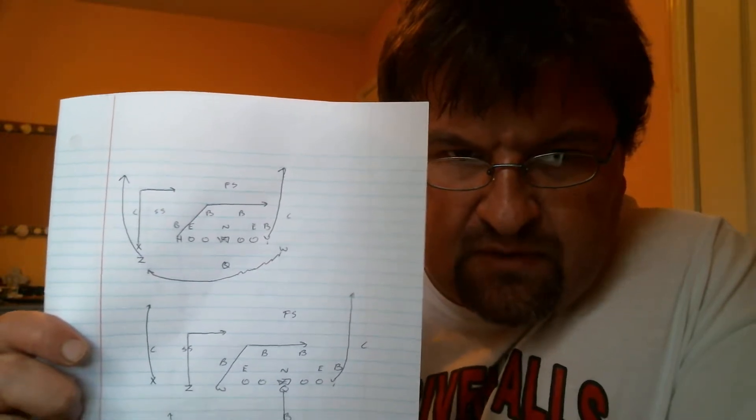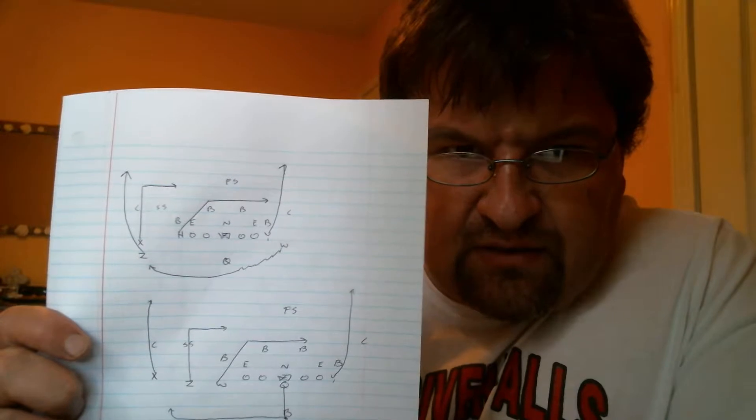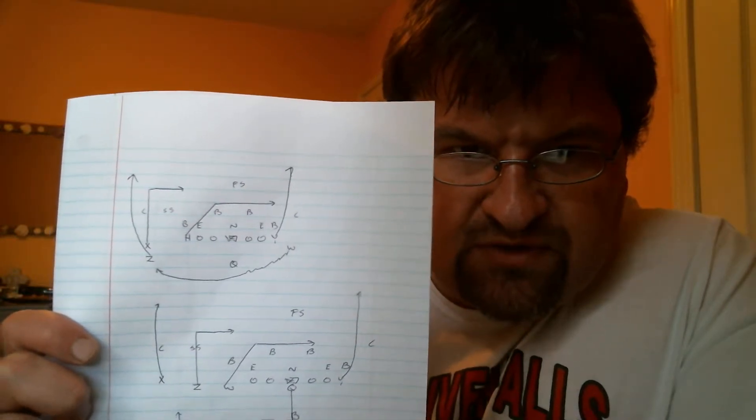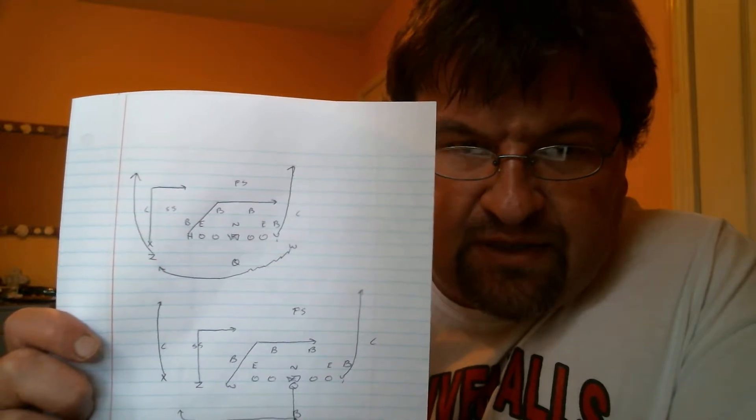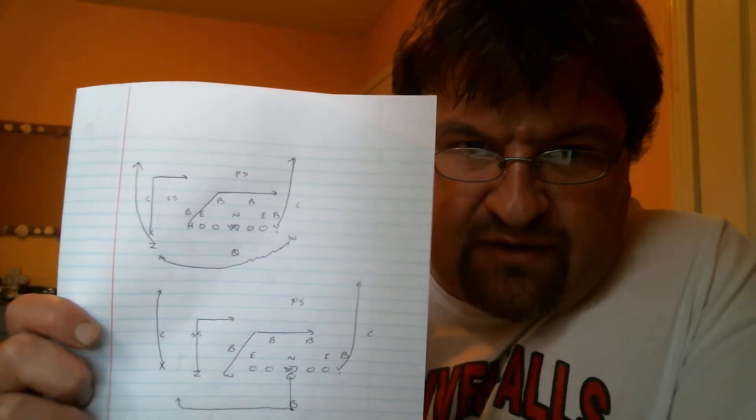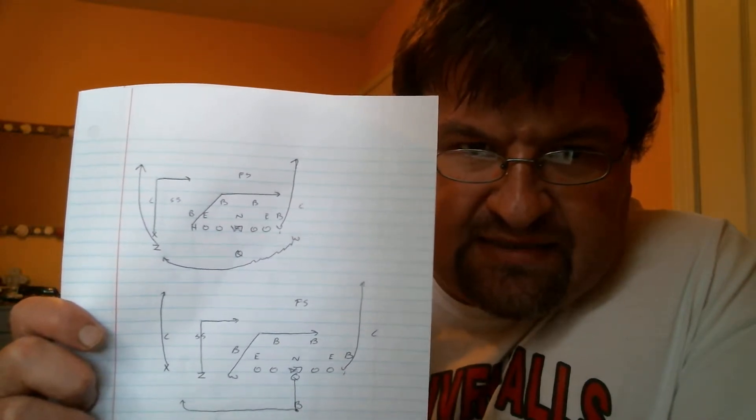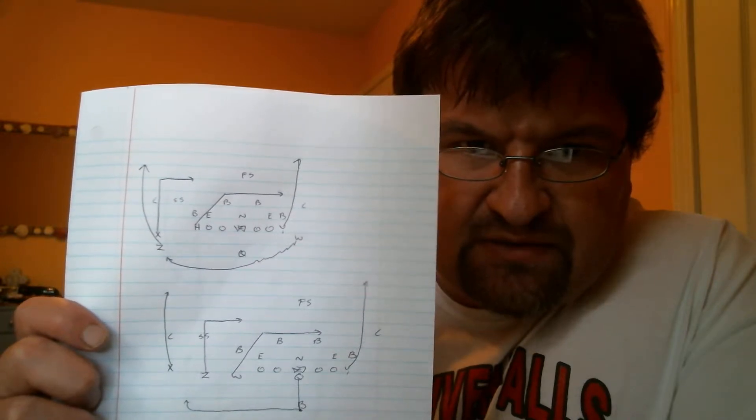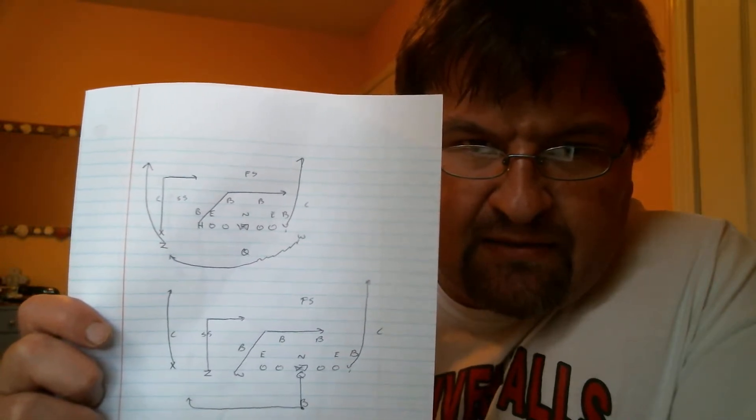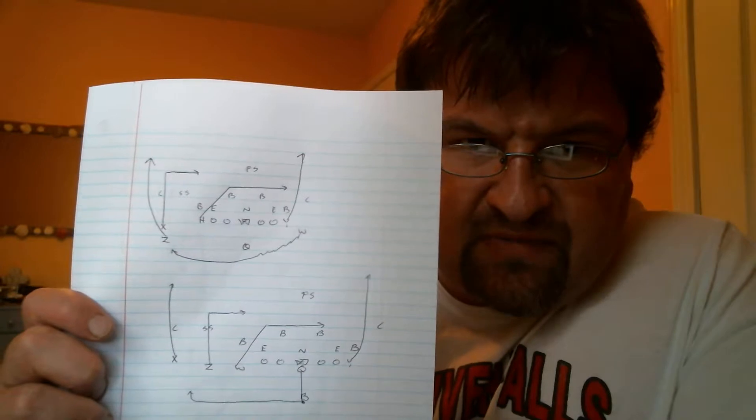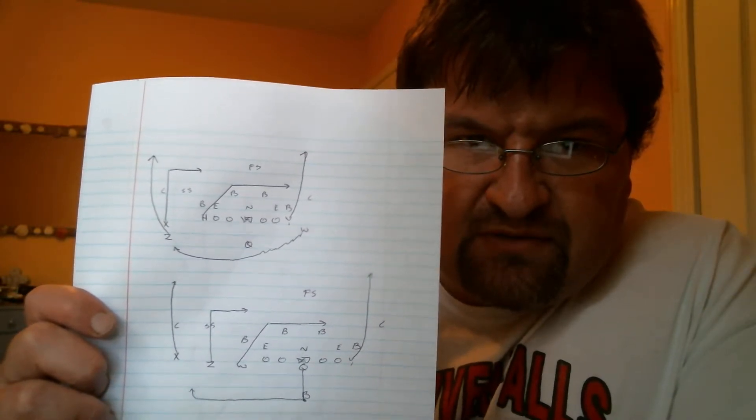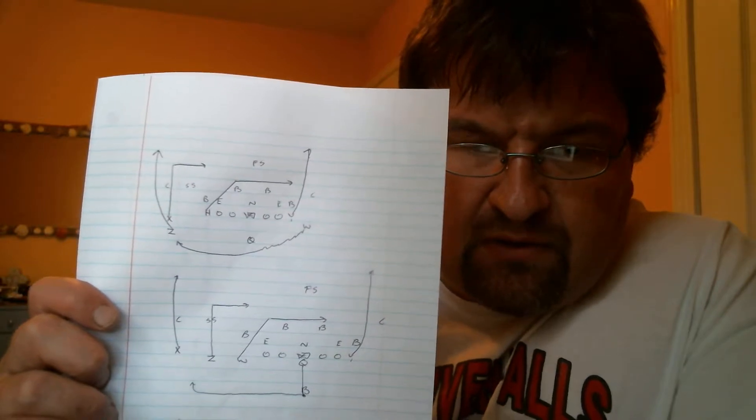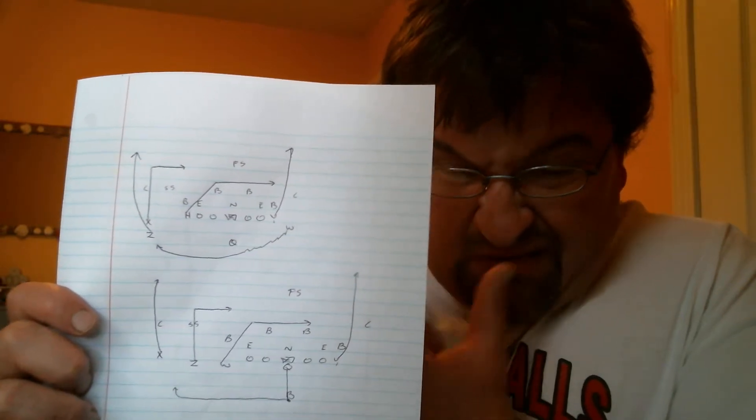They can do the dig wheel or the streak dig combo. Now H is going to run a drag route. What he's doing, he's cutting inside underneath that linebacker there and he's trying to get just behind the middle backers, about 8 to 12 yards. That's where he starts to come across on the drag.